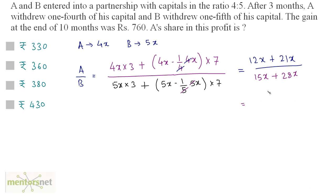So this is equal to 33x upon 43x. So x gets cancelled out. The ratio is A:B is 33:43 and this ratio is the ratio of the profits earned by A and B.